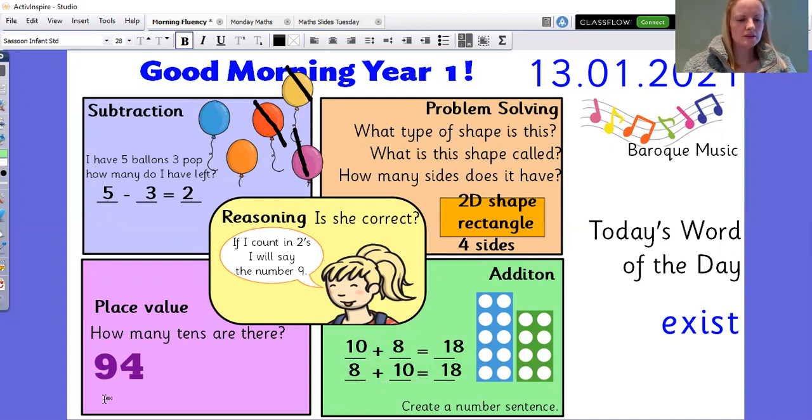Now the place value question, we know that this is the tens column. And this is the ones column. So there are nine tens.